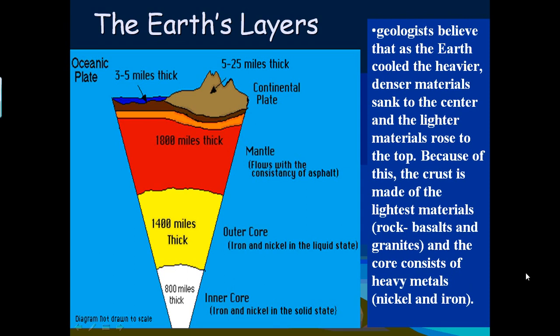Geologists believe that as the Earth cooled, heavier, denser materials sank to the center while lighter materials rose to the top. Because of this, the crust is made of lighter rocks like basalt and granite, while the core consists of heavier metals like iron and nickel.